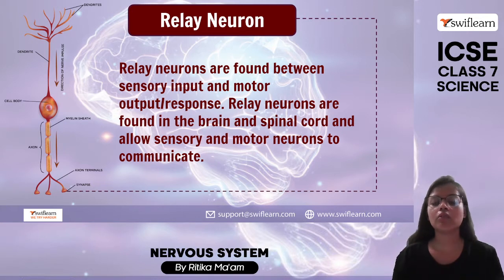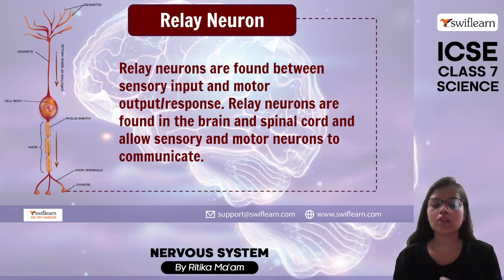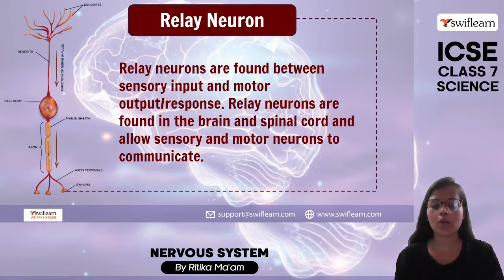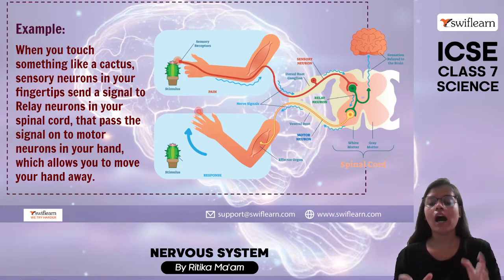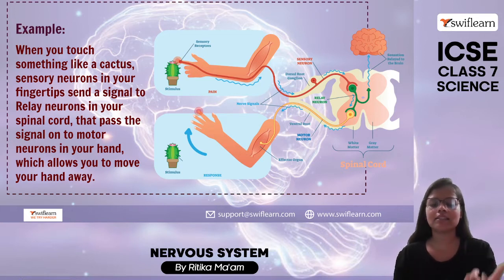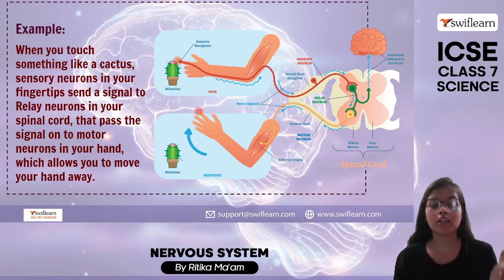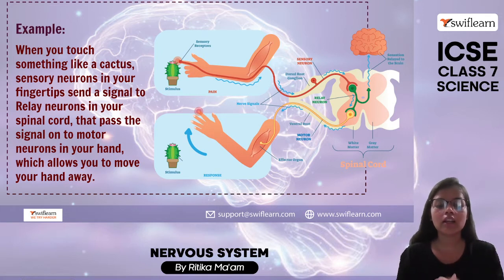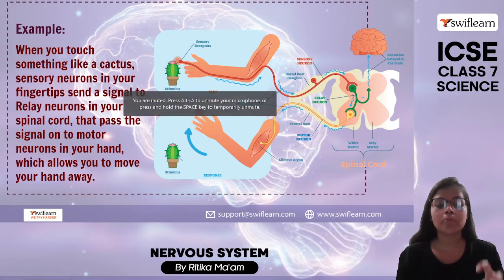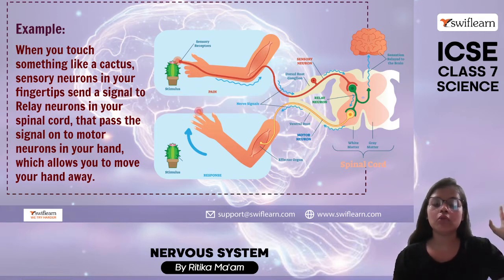Next we have relay neurons. Relay neurons are found between sensory input and motor output — they are found in the brain and spinal cord and they allow sensory and motor neurons to communicate. For example, if I touch something very sharp like a cactus, the sensory neuron in our fingertip sends a signal to the relay neuron, and this relay neuron in our spinal cord passes the signal to the motor neuron in our hand — and that is how we remove the hand immediately.